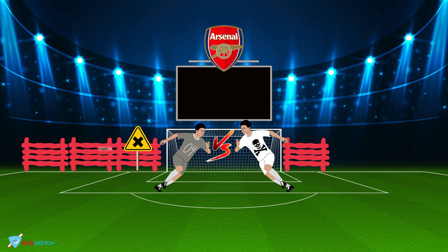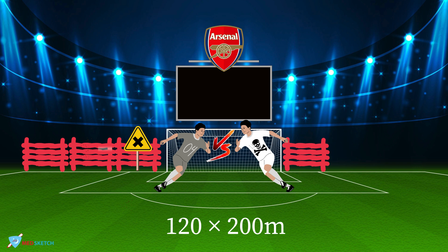Let's talk about the fatal dose and fatal period of arsenic. You can see markings in the center of the ground representing an area of 120 to 200, representing a fatal dose of 120 to 200 grams. The fatal period of arsenic is represented by a red LED clock on the right side, which reads 12–48 hours. So the fatal period of arsenic is 12 to 48 hours.